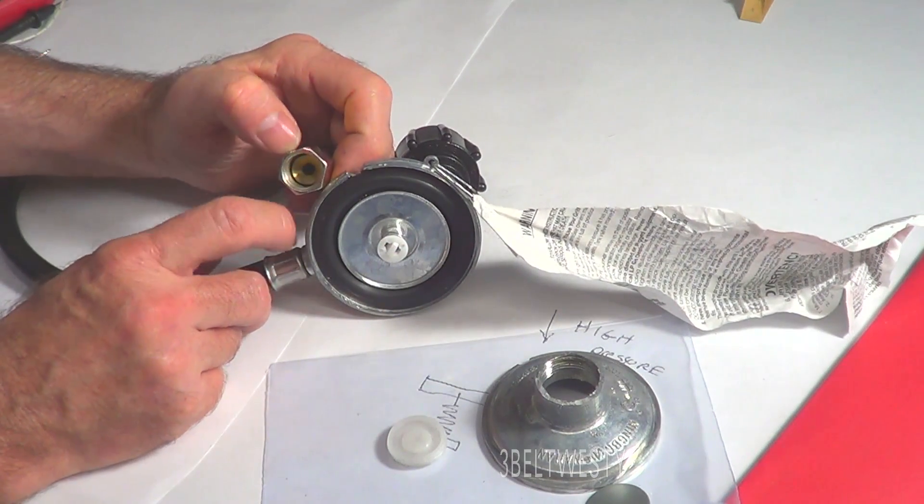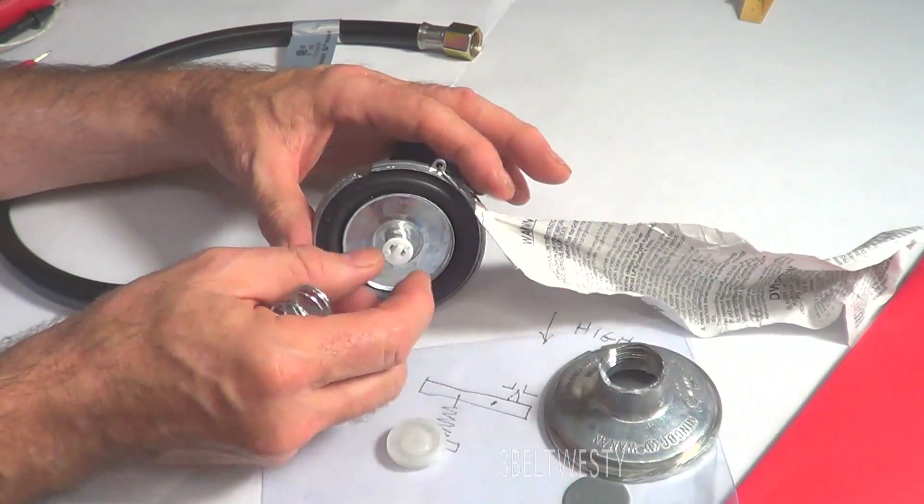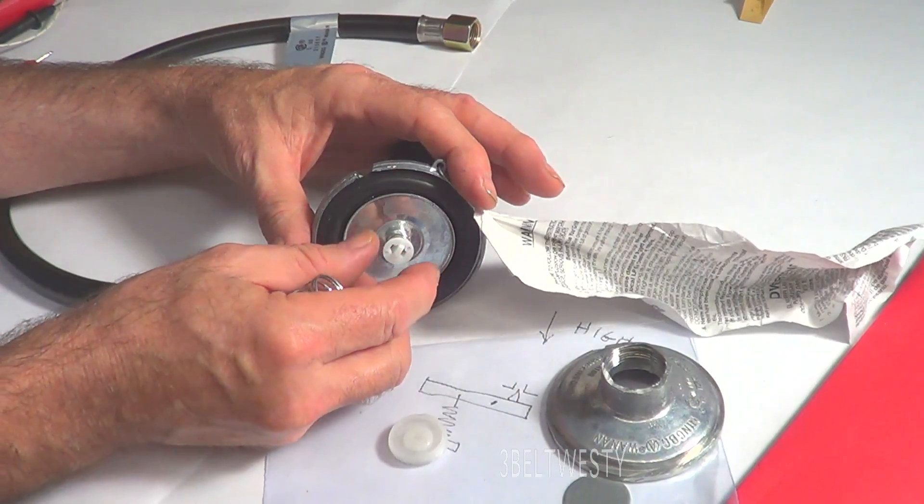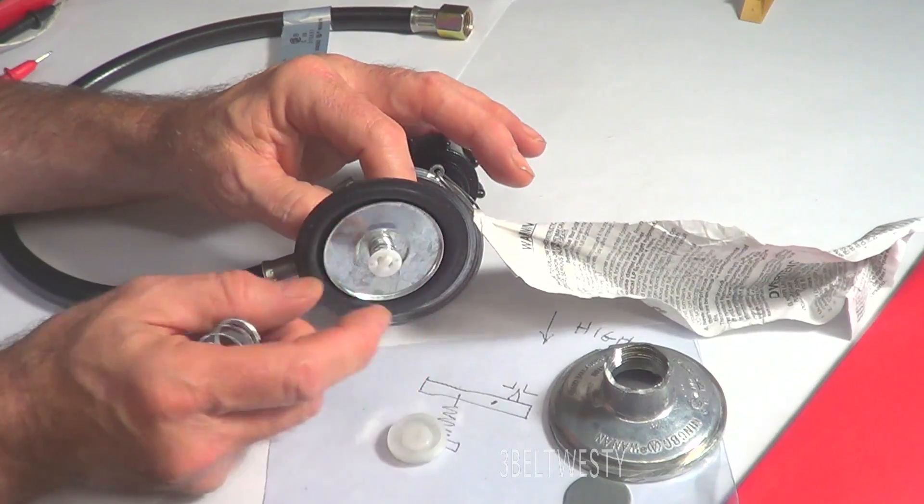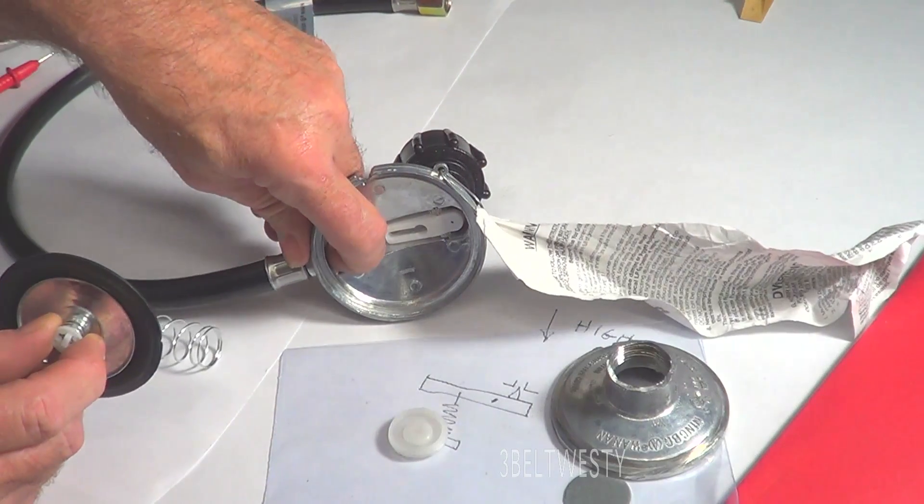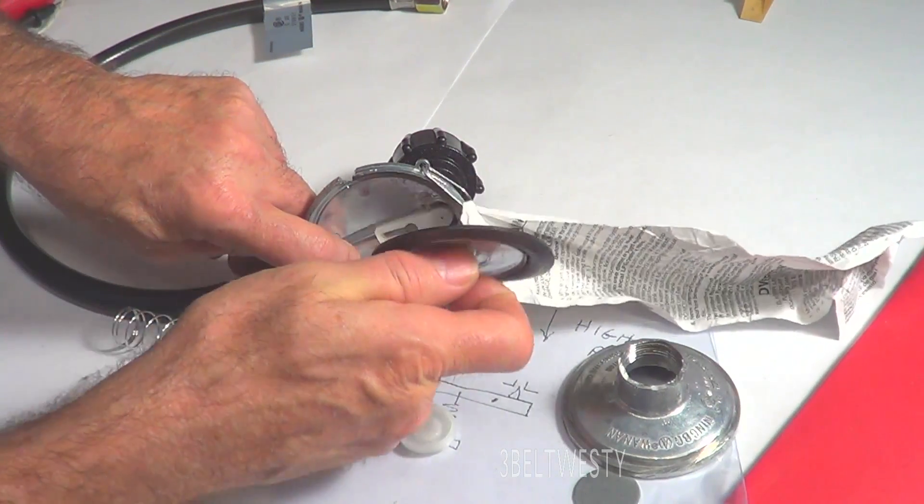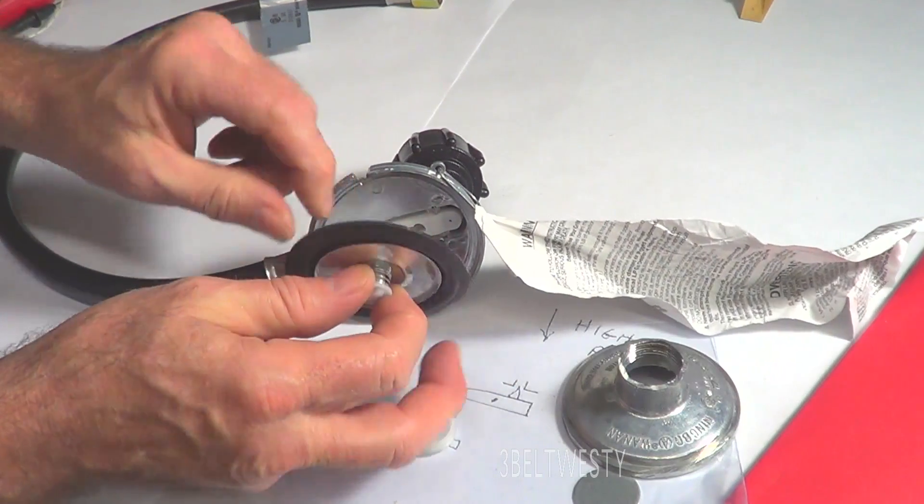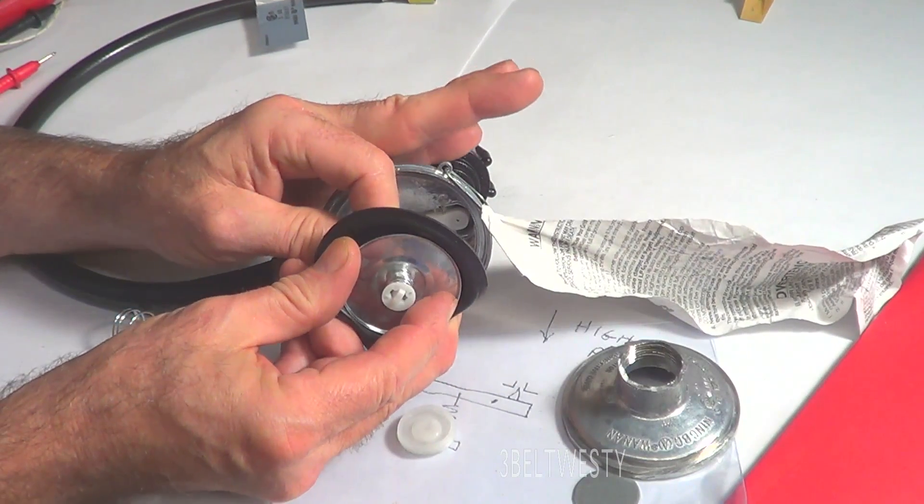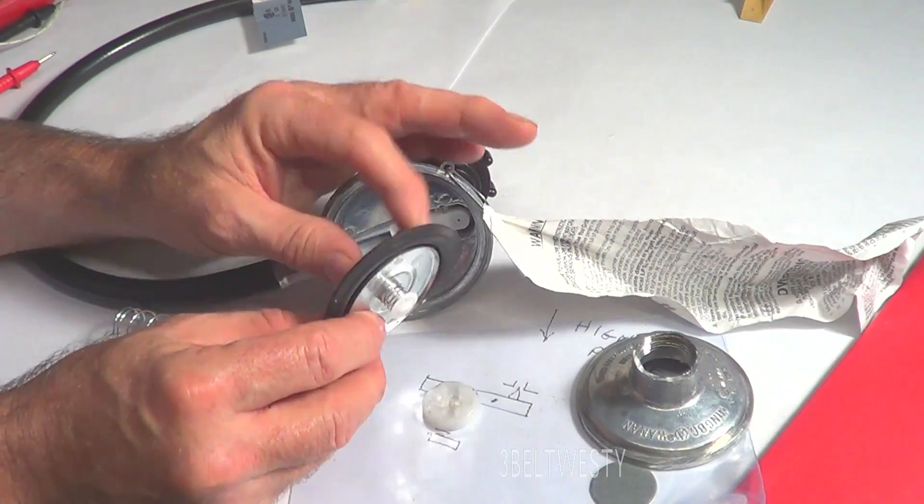Now if you have a situation where this got blocked, what can happen is this whole housing can explode. So to prevent that, there's a secondary spring here which is a safety spring. What that does is if this is blocked, the full pressure from the LP tank would be inside this cylinder and it's going to push this forward and it's going to bottom out on this piece.